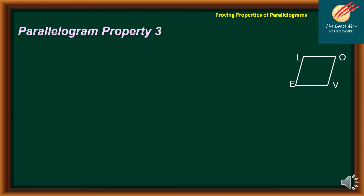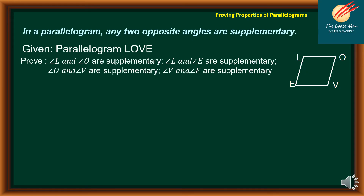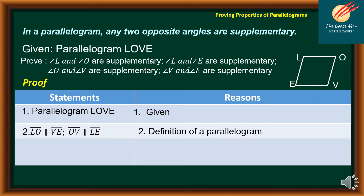Let's move on to the third property of a parallelogram: in a parallelogram, consecutive angles are supplementary. We have the given parallelogram L-O-B-E. We would like to prove that angle L and angle O are supplementary, angle L and angle E are supplementary, angle O and angle B are supplementary, and angle B and angle E are supplementary. For statement number one, parallelogram LOBE — reason is given. For number two, line segment LO is parallel to line segment BE, and line segment OB is parallel to line segment LE — reason is definition of a parallelogram.